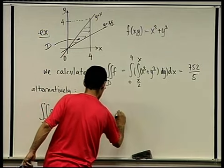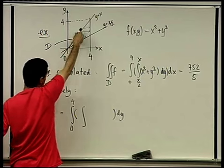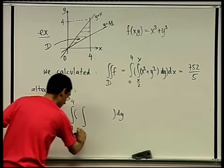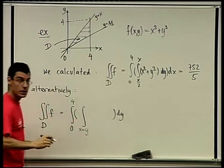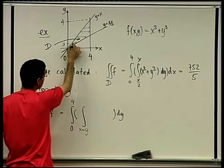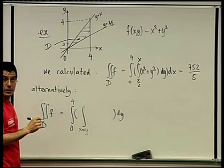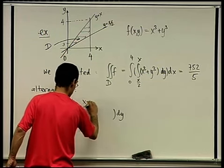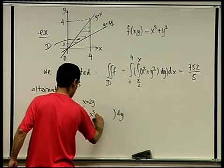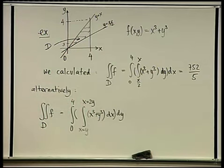For each fixed y, I integrate dx. The bottom function is y equals x, written as x equals y. And for fixed y, I go from x equals y all the way up to x equals 2y. So it seems like the integral is from x equals y to x equals 2y of x³ + y³ dx. Does everybody agree that this is correct? Try calculating it, and you're going to see that it's wrong.